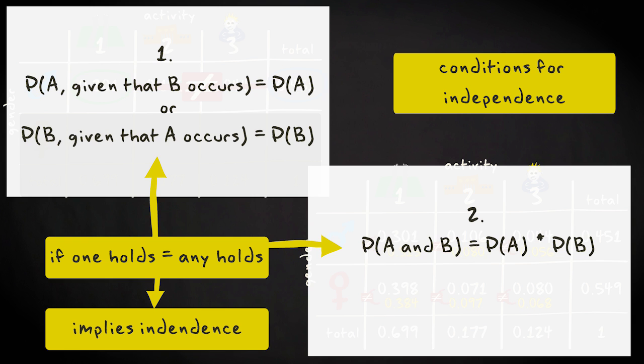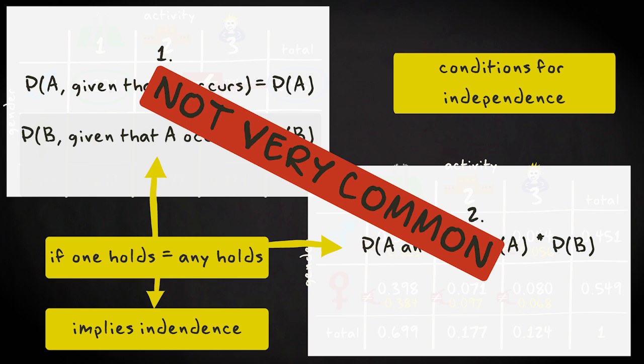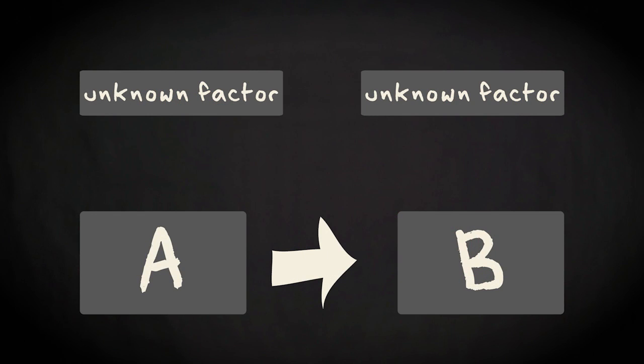For many real-life situations, independence among random events is not that common at all. Quite often, there are unexpected and unknown factors that influence the events of interest,